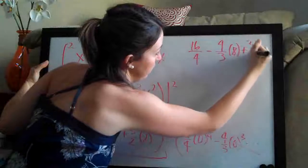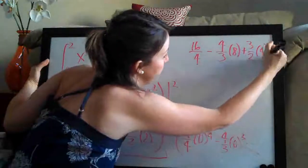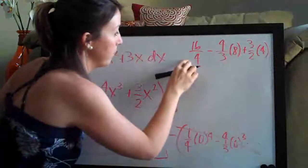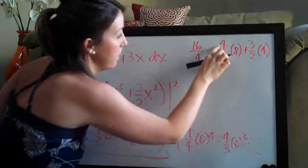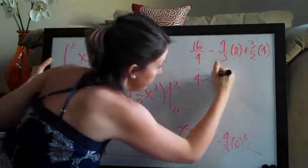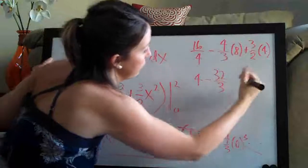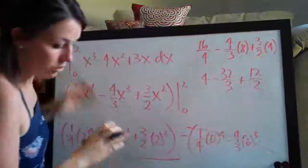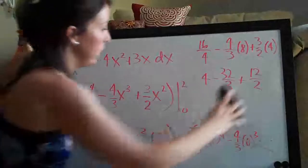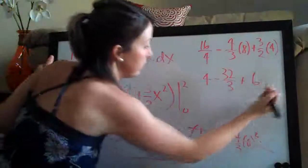So 16 over 4 is 4, 4 times 8 is 32 so minus 32 thirds, and then 3 times 4 is 12 so plus 12 over 2 which is actually going to simplify. 12 over 2 is just 6 so we have 6 here.